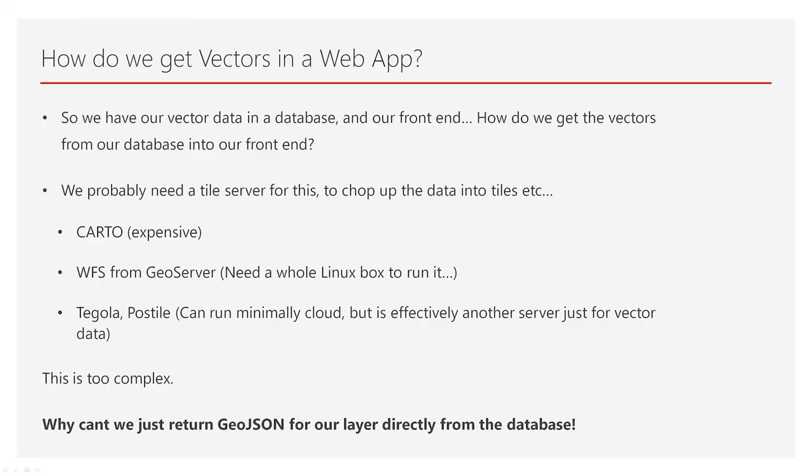So how do we get vectors into our web app? We have our vector data in a database and our front end, so how do we get those vectors from our database into the front end? One way to do this is with a tile server — something that cuts up these vectors into tiles and delivers them to the client on a needs basis. There are options: Carto is pretty expensive. You can have a web feature service out of GeoServer, but you need like a whole Linux box to run that, so sometimes that's overkill. There are other options like Tegola and PostTile — one's written in Go, one's written in Python, so you can run them pretty minimally on something like App Engine. But for something really simple, I feel like this is just all too complex.